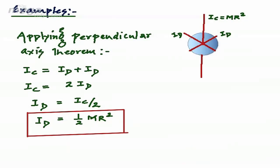An important point: using Perpendicular Axis theorem we must keep in mind that it is only valid for plane laminar bodies. It is not valid for three-dimensional bodies such as sphere, cone, or hollow sphere.